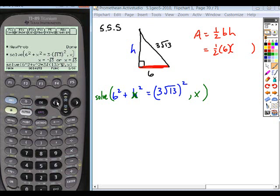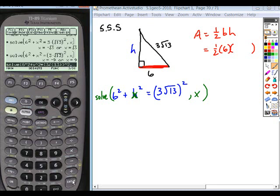So what I would need to do when I enter this is make sure that I have parentheses around my whole quantity three root thirteen. And then the power is applied to that whole grouping. And so now when I hit enter, that is my solution.